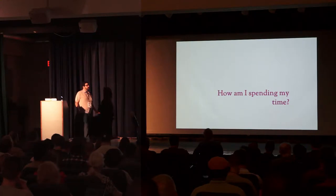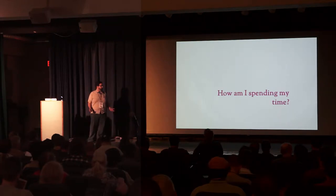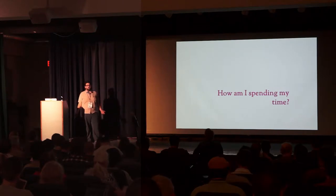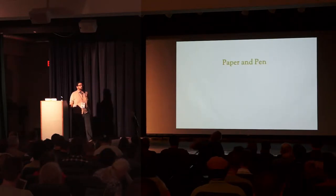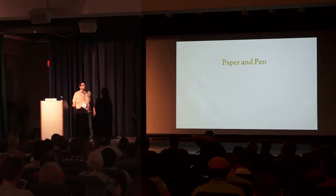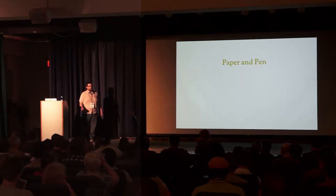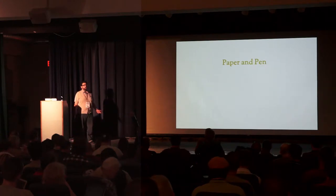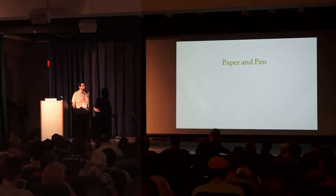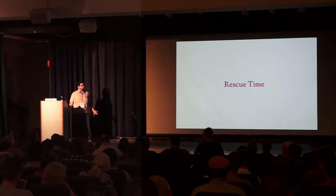First, we have to look at how we're spending our time — how are we as developers working, and what are we spending our time trying to achieve? One way is pen and paper: write down the steps you're taking. For example, when you get a bug report, you go to your tracker and file it, then try to replicate it, then fix it — perhaps writing a unit test before that, depending on your workload. But this is kind of inefficient and annoying, and no one really wants to write down every step they take.